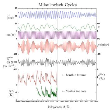Jung-Eun Lee of Brown University proposes that precession changes the amount of energy that Earth absorbs, because the Southern Hemisphere's greater ability to grow sea ice reflects more energy away from Earth. Moreover, Lee says, precession only matters when eccentricity is large.